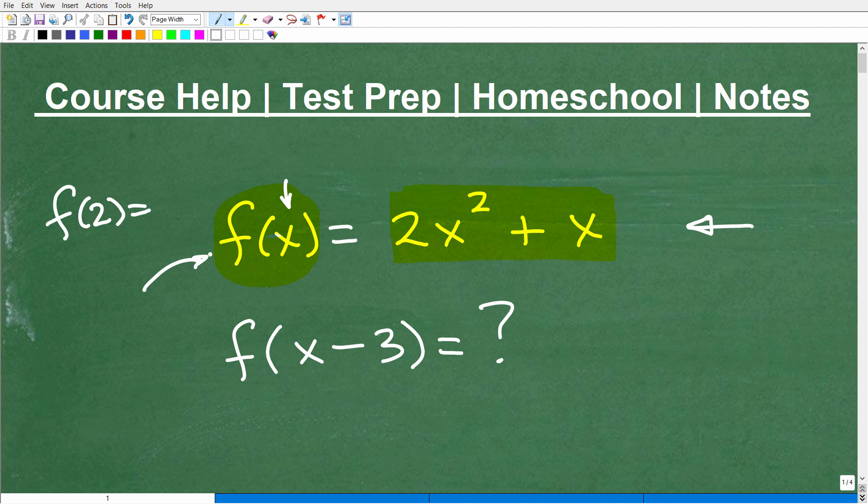But functions are absolutely critical in algebra. So you can evaluate functions with numbers, this type of function, but here we're going to do something extra special. We're going to evaluate this function, f of x equals 2x squared plus x, with x minus 3. So I want you to evaluate this function for x minus 3.